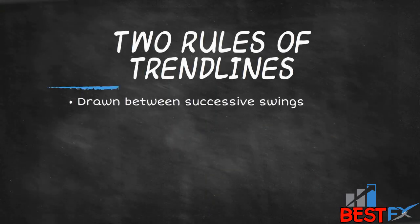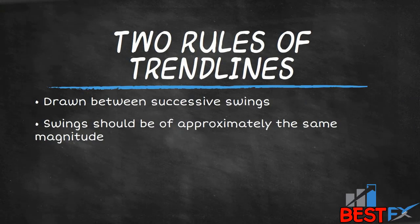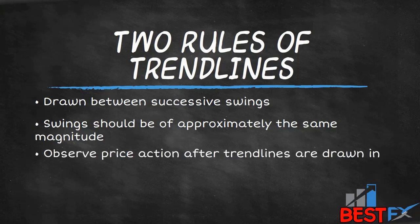To emphasize the important part: the two rules of trend lines are as follows. One, trend lines are drawn between successive swings. Two, swings chosen should be approximately the same magnitude. Why do we do this? If we're going to use trend lines as a tool and take advantage of the psychology at play in the markets, we can't use random actions to determine outcomes. We need to be consistent in our behavior and judge market outcomes through the lens of consistency. These two rules give you that consistency in behavior.